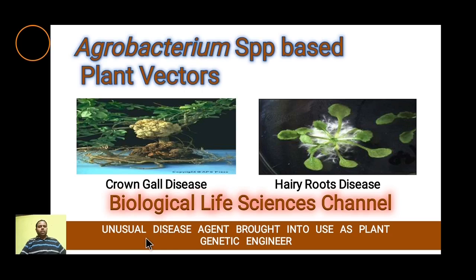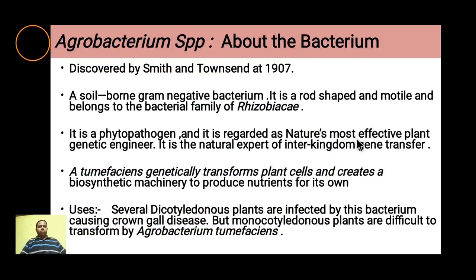These are unusual agents that are brought into use as plant genetic engineers and are naturally occurring. It was first discovered by Smith and Townsend in 1907. It is a soil-borne, gram-negative bacterium — rod-shaped and motile — and belongs to the family Rhizobiaceae. It is a phytopathogen and is regarded as nature's most effective plant genetic engineer, as gene transfer occurs directly into the plant quite successfully.